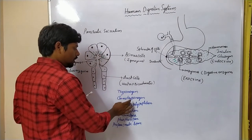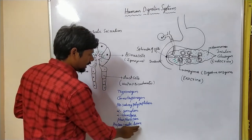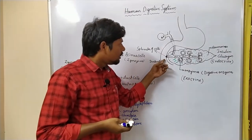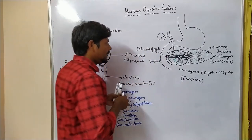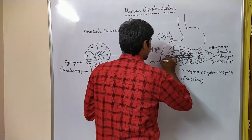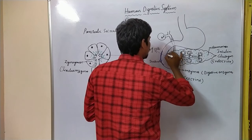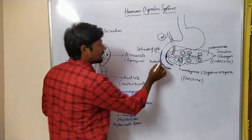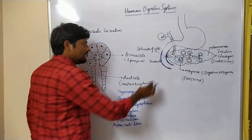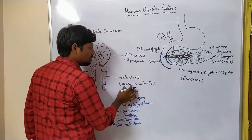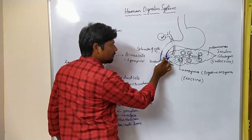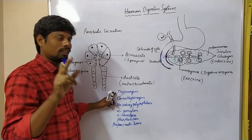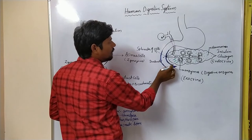Whenever trypsinogen, chymotrypsinogen, procarboxypeptidase, and pro-pancreatic lipase are in inactive condition, that inactive condition must be activated to act on the food particle. That activation is done by the intestinal layer — the intestinal duodenum layer, the intestinal layer of the small intestine. The internal layer of the small intestine produces the enterokinase enzyme, which acts on the trypsinogen.